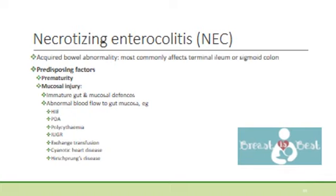NEC is largely a condition found in premature babies — the more preterm, the more likely they are to develop NEC. However, in the most preterm babies, it can take two to three weeks before they present. Mucosal injury can result due to the immature gut and mucosal defences. Abnormal blood flow to the gut mucosa leads to hypoxia and relative ischaemia, creating an entry point for organisms. Examples of abnormal blood flow include birth asphyxia or HIE, and patent ductus arteriosus, where blood flows away from the aorta through the ductus arteriosus, reducing gut perfusion.